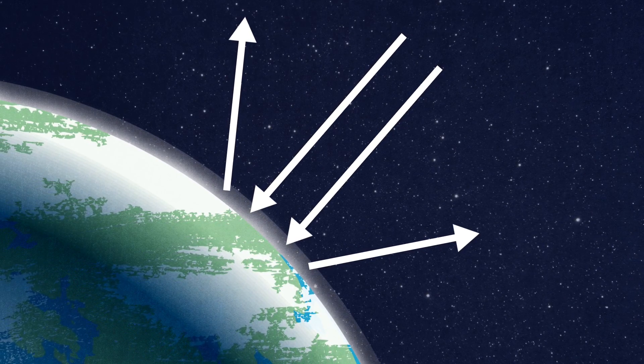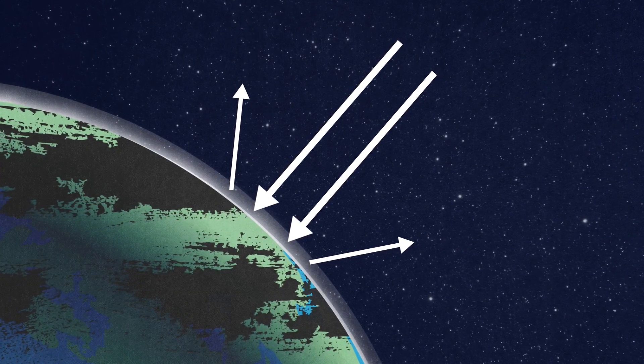For example, a planet with white clouds, like Earth, reflects more light than one with darker clouds.